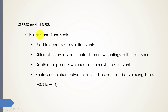The Holmes and Rahe scale is a scale used to measure stressful life events. They surveyed numerous people and tabulated different life events, giving these events different weights contributing to a total score. One of the common exam questions is: what is the number one stressor according to the Holmes and Rahe scale? And that, of course, would be the death of your spouse. Death of a spouse is linked to depression and is linked to suicide.